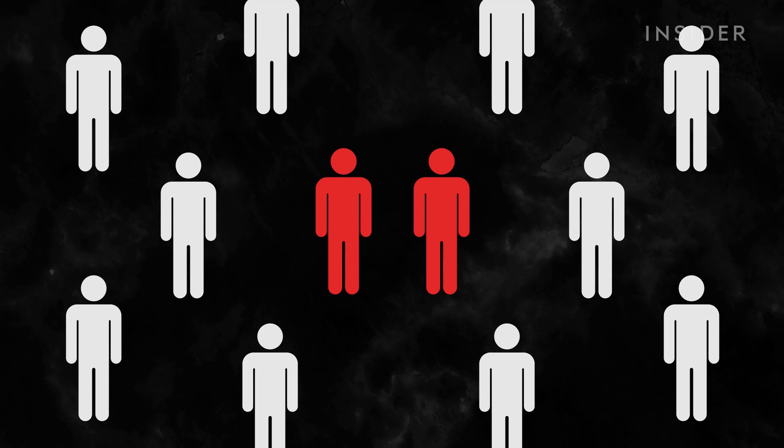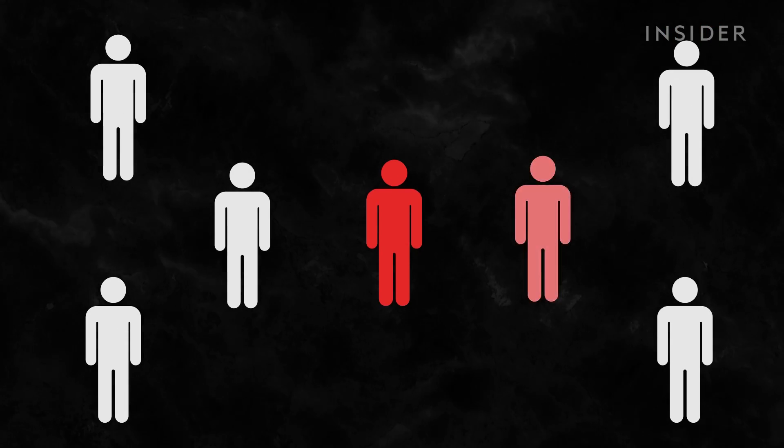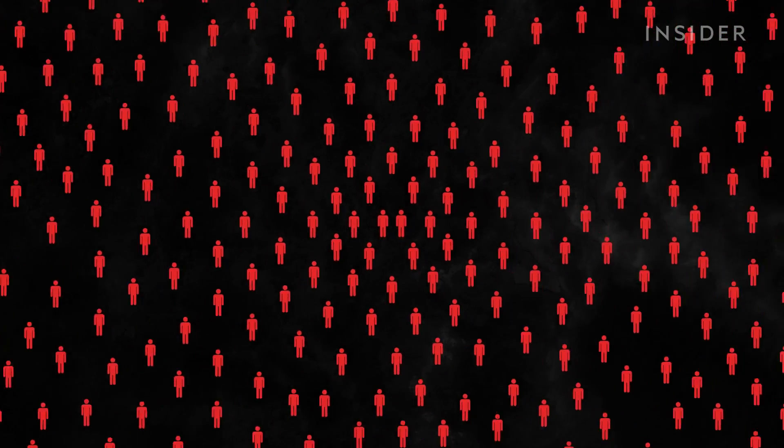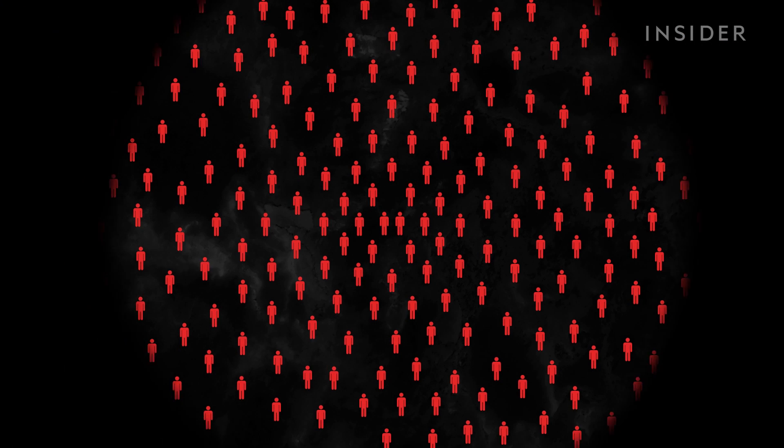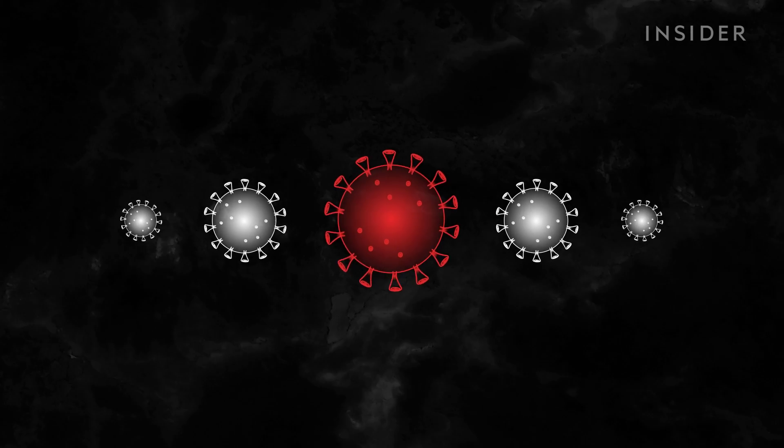A virus infecting two people has double the odds of going on to infect additional people compared to a virus infecting just one. And this can continue until it reaches epidemic and pandemic proportions. COVID-19 was certainly not the first zoonotic disease. And it won't be the last.